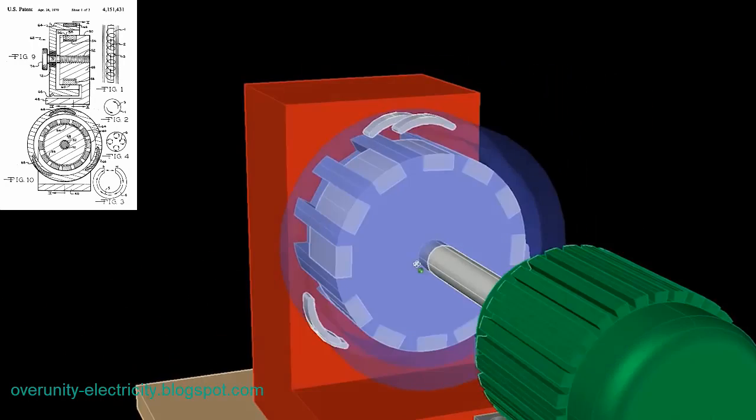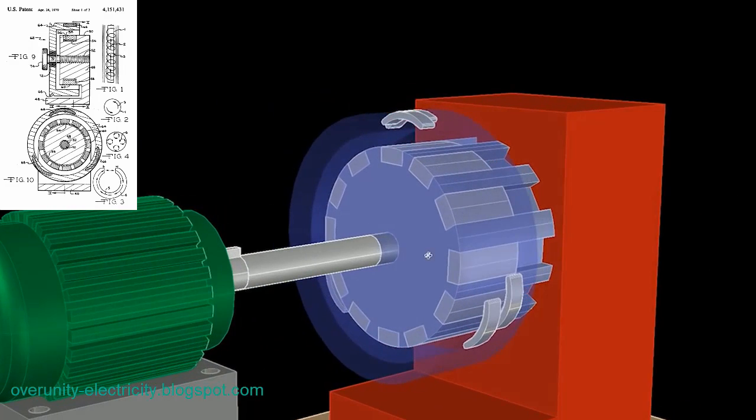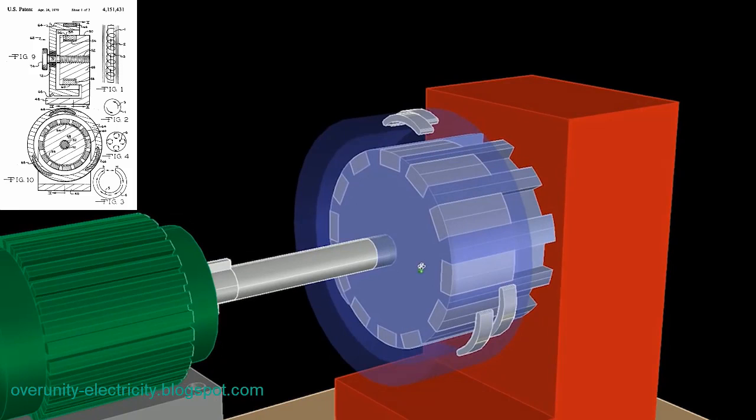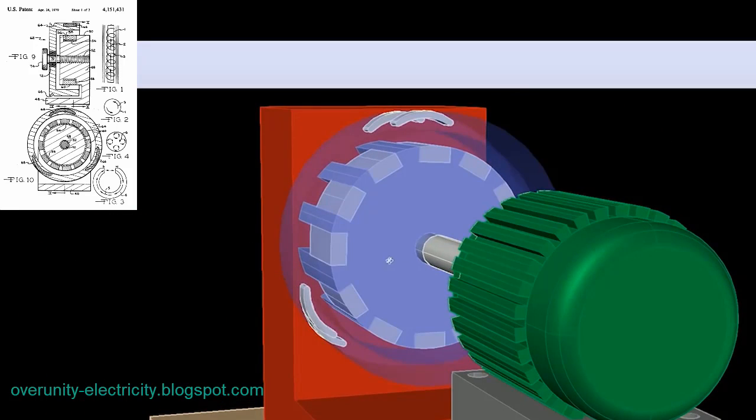The motor consists primarily of two key components: the rotor and the stator. The rotor is connected to a generator, while the stator, mounted on the right side of the setup, houses the stator magnets, which interact with the rotor to generate motion.